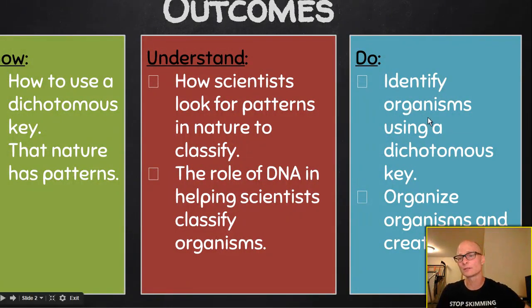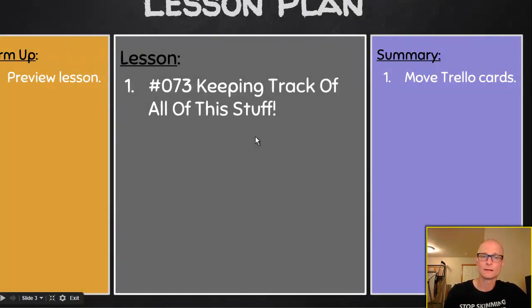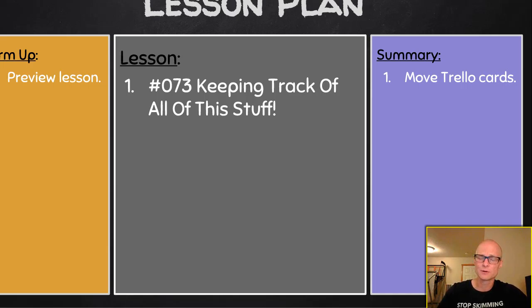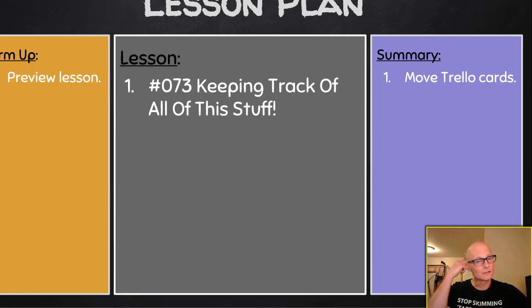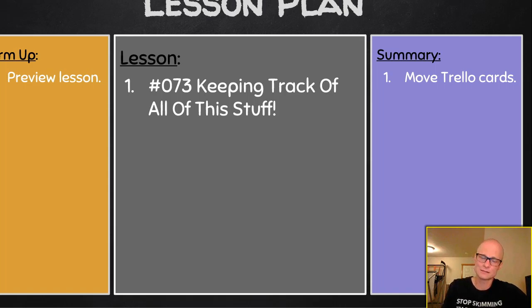In the meantime, we're going to identify organisms using a dichotomous key, then you will organize organisms and create a key of your own. All of this is under Google Classroom number 073, and includes links to the practice dichotomous keys we use in class, as well as the final imaginary organisms called Caminalcules, made famous by — I believe it's a Harvard professor, maybe Cornell, I can't remember — that we use to test our skills, and that'll take us all the way through Monday.